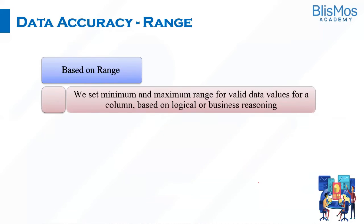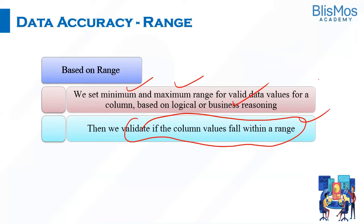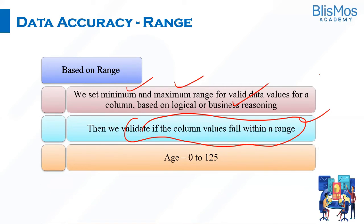For the range approach, the requirement should specify that a value must fall between a certain range — it depends on the project and the column. We set the minimum and maximum range for valid data values based on the business specification, then validate that column values fall within that range. For example, if the project specifies that age can be 0 to 125, then values like 127, 150, or 200 should not be allowed — the column should not accept values greater than 125.